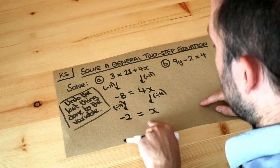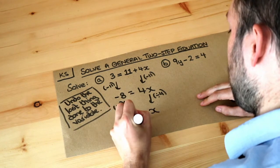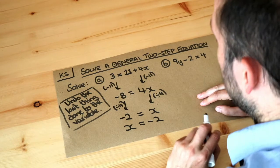And sometimes people prefer to write the x on the left hand side of the end so you could write x equals minus 2, but that's a perfectly acceptable answer.